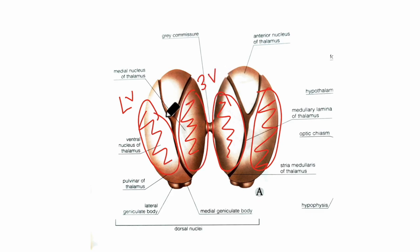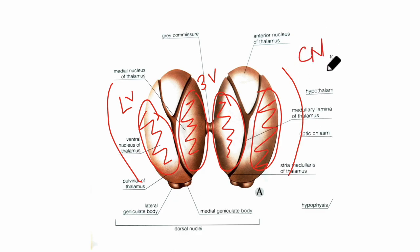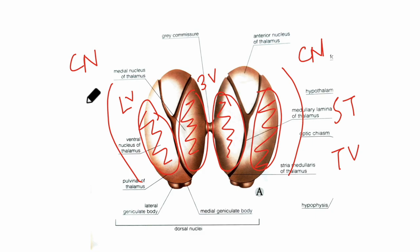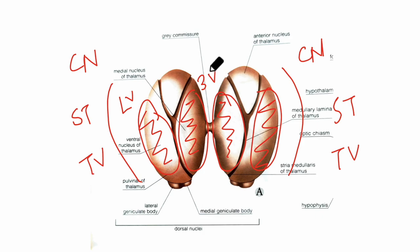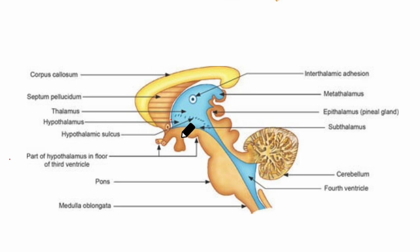These structures are limited laterally — that is, away from the midline — by three structures: the caudate nucleus, the stria terminalis, and the thalamostriate vein. These are the three structures that bound the thalamus laterally. It is limited medially by a structure called the habenular stria. Finally, the inferior surface of the thalamus rests on the subthalamus and the hypothalamus.